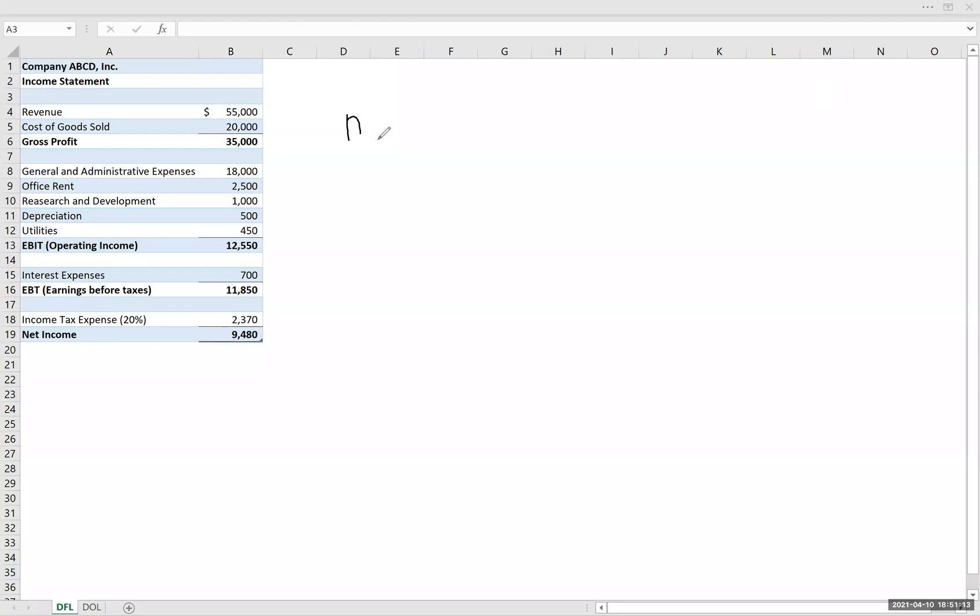All right, so today we are going to look at degree of financial leverage, and we're going to do this using the income statement rather than the balance sheet. A lot of times you see assets over equity, that's another way to calculate leverage. That requires using the balance sheet, which we are not going to use today. Today, we are going to use the income statement.